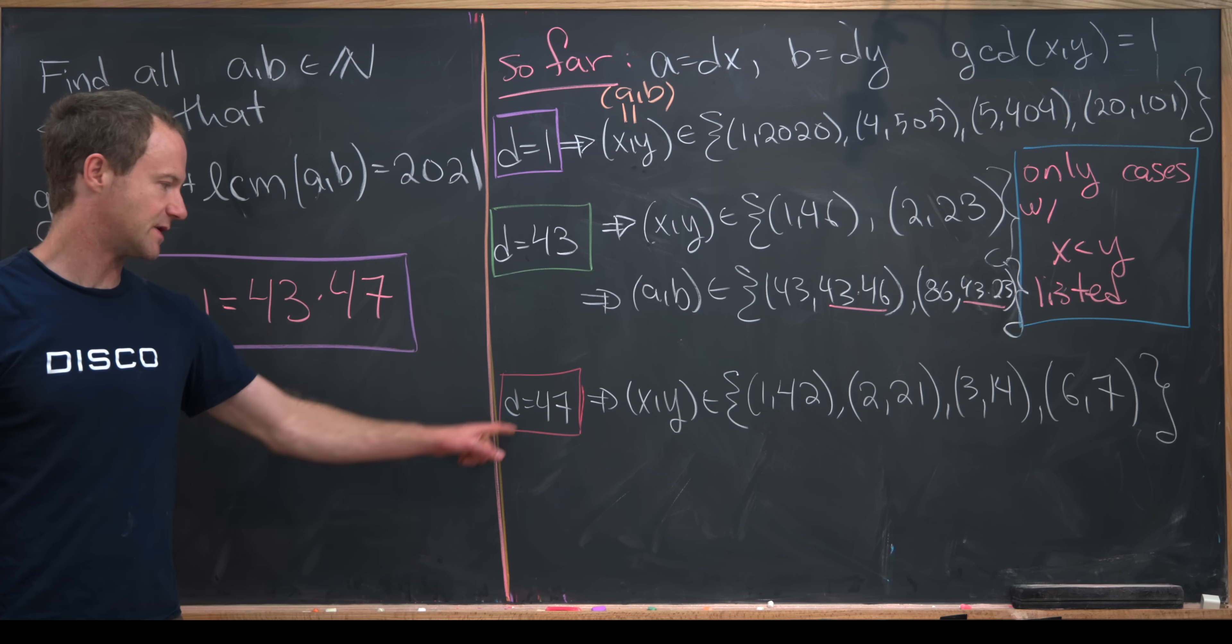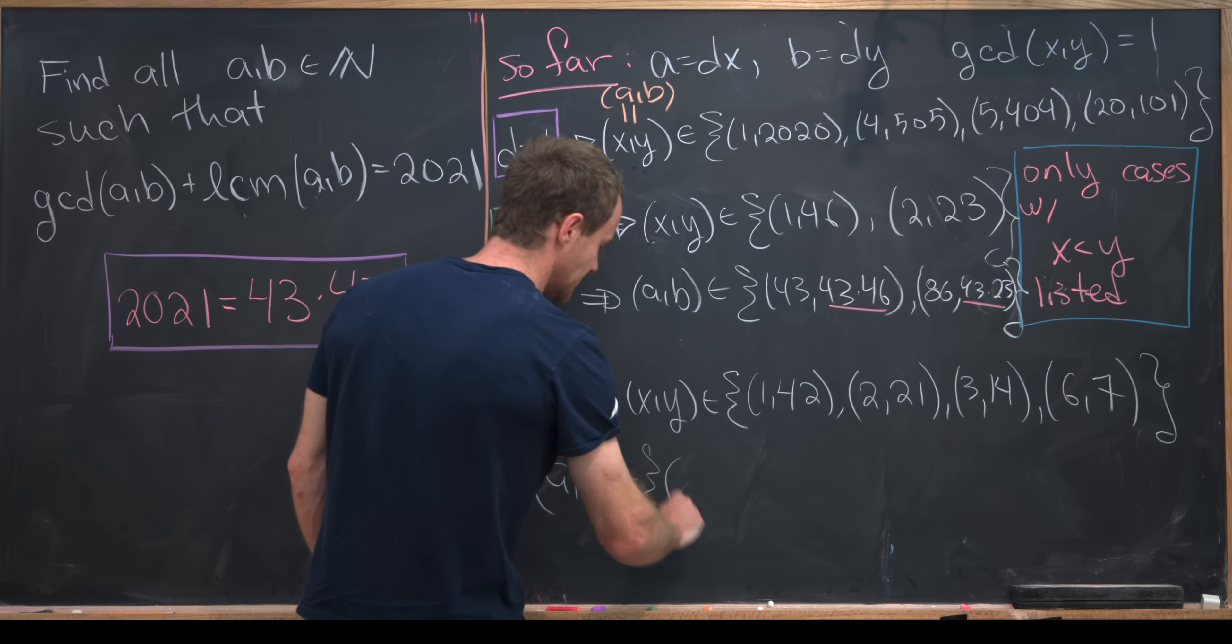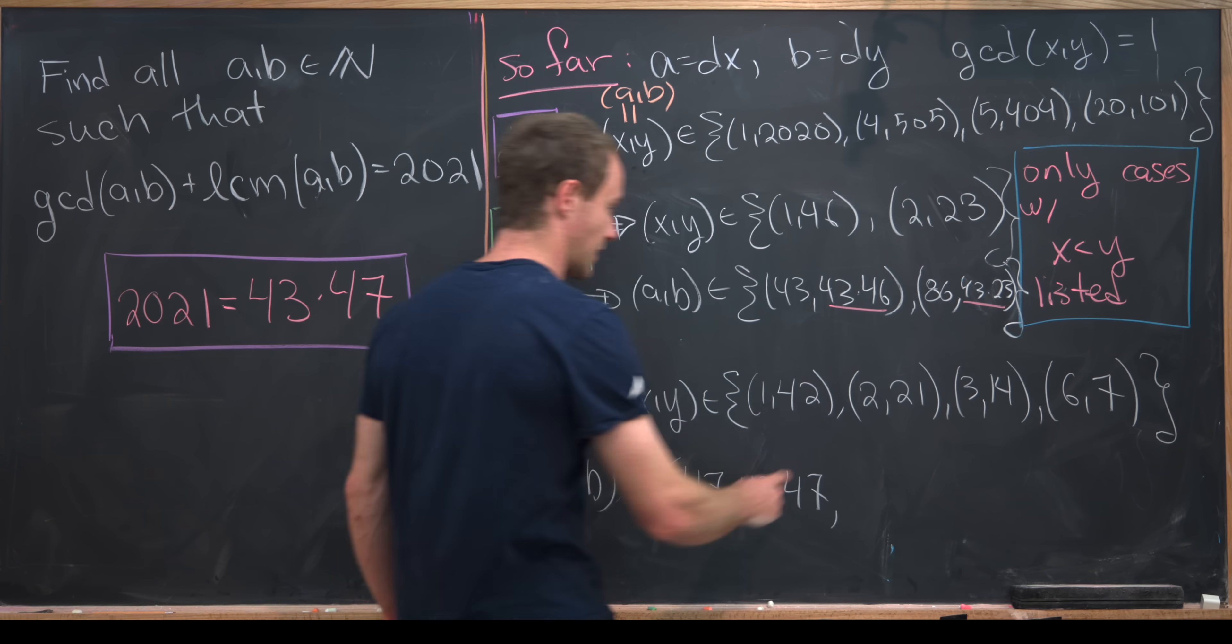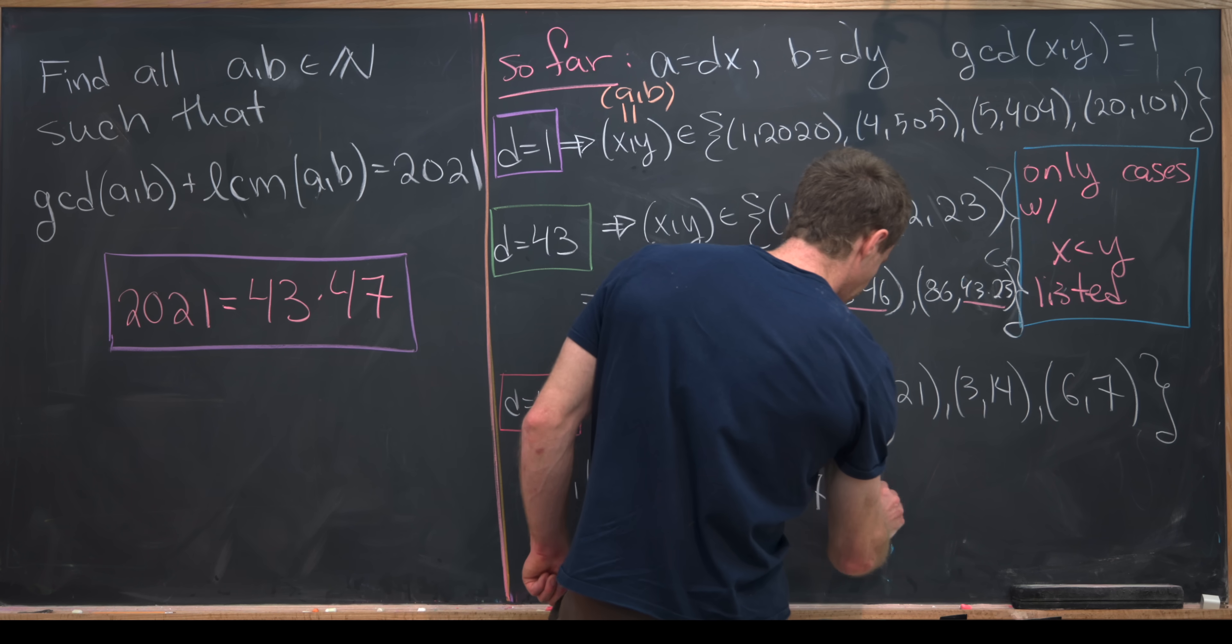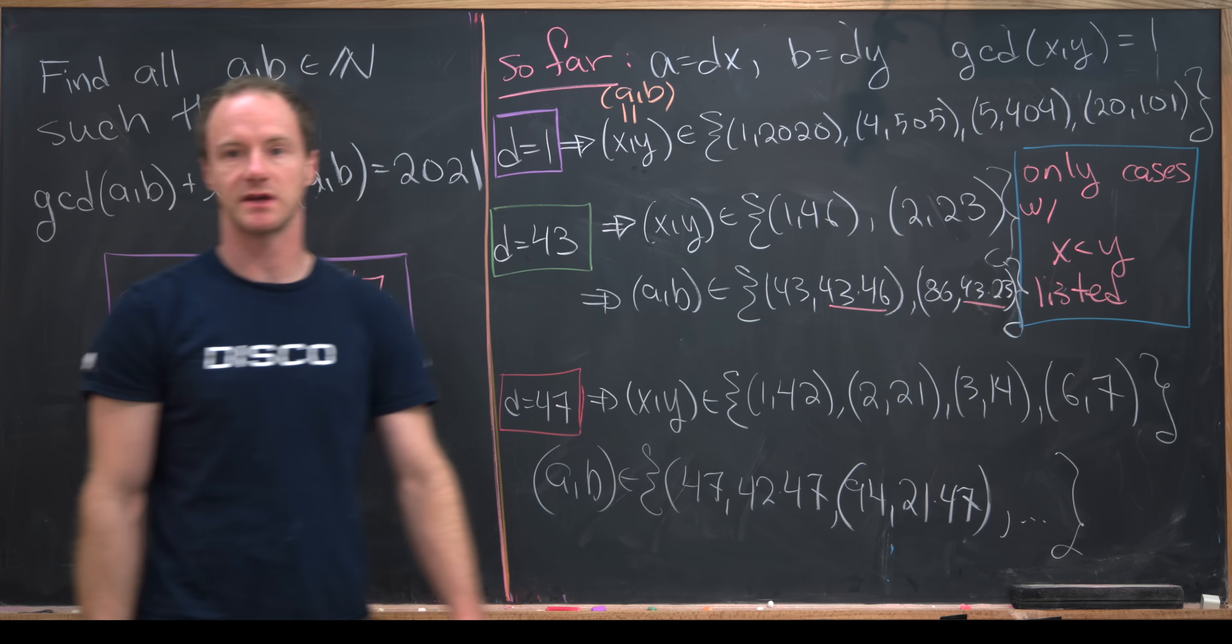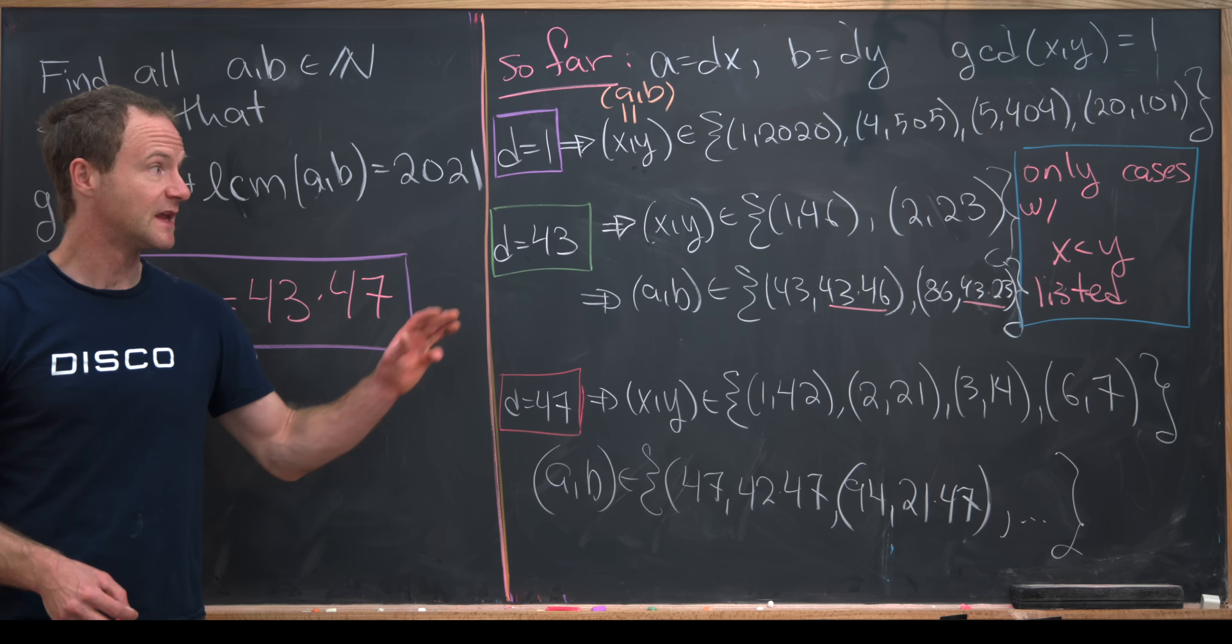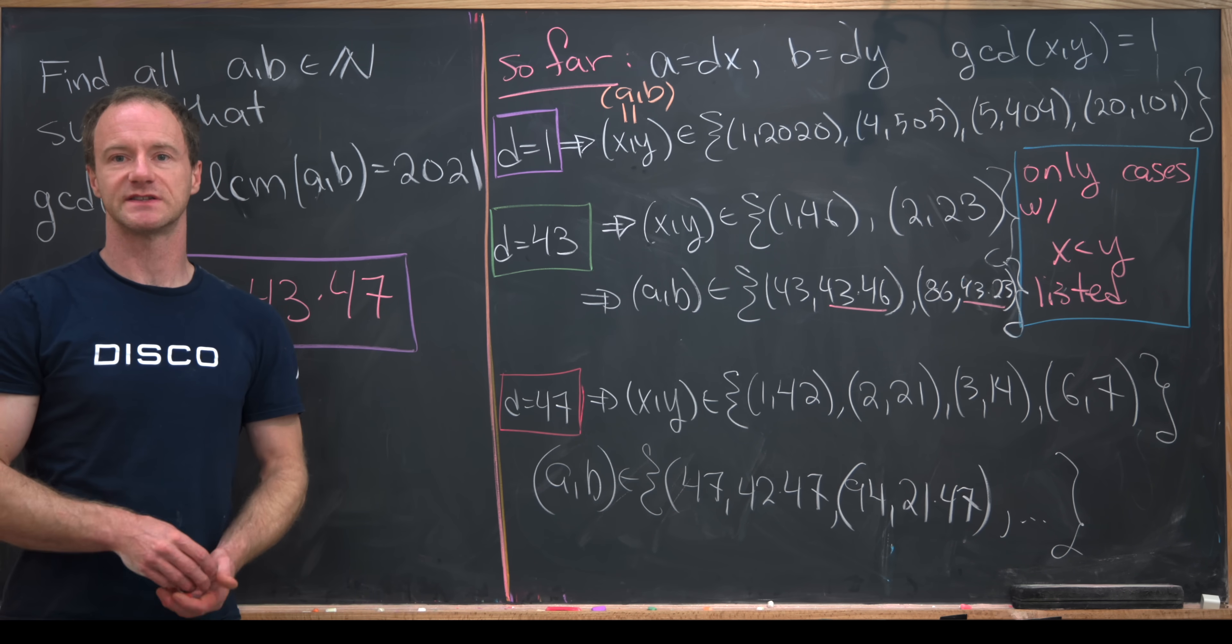And we have the same kind of setup here. D is equal to 47, so that means that AB can be constructed from each of these ordered pairs. We've got 47, 42 times 47 from this first ordered pair, we've got 2 times 47, that's going to be 94, and then 21 times 47, that's from the second ordered pair. And then you can finish it off similarly. So all in all, there are a lot of possibilities for A and B, especially when you list the other cases when X is bigger than Y. And that's a good place to stop.